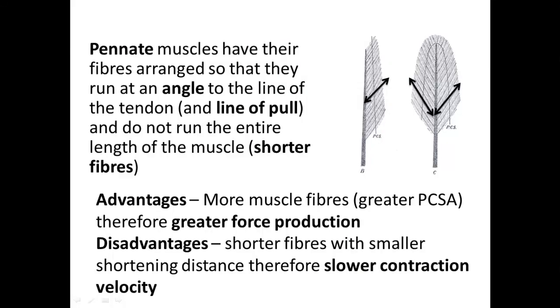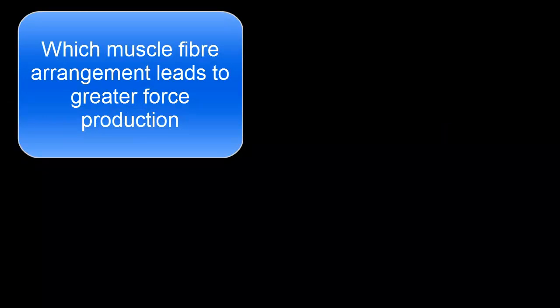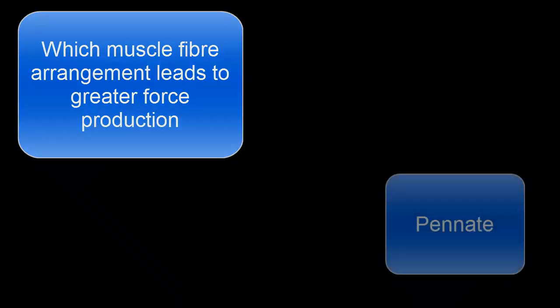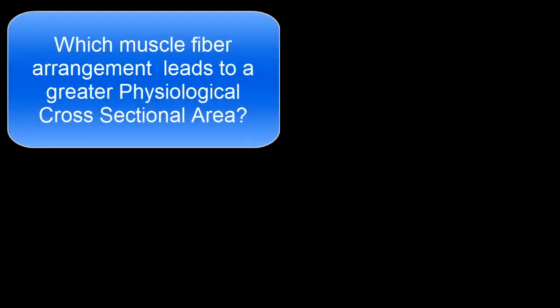To summarize pinnate muscles: their fibers are arranged at an angle to the line of pull and don't run the entire length of the muscle. The advantage is that more muscle fibers can be packed in, giving a greater physiological cross-sectional area and greater force production. The disadvantage is shorter fibers with smaller shortening distances, resulting in slower contraction velocity. In short: pinnate is strong but slow; fusiform is fast but weak.